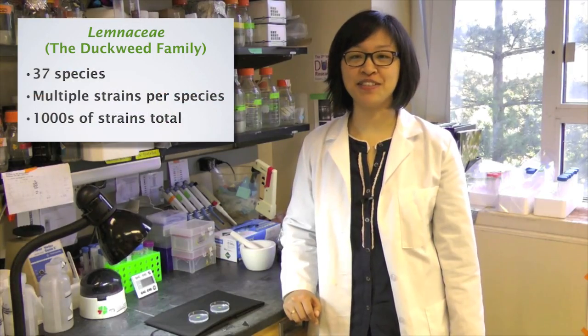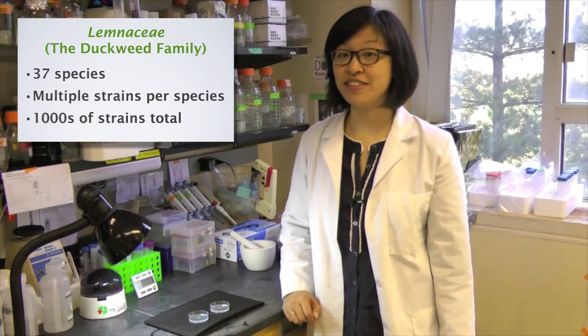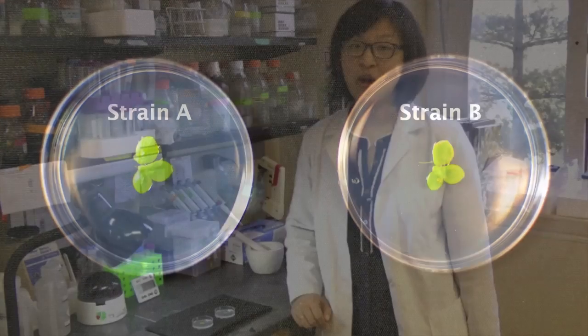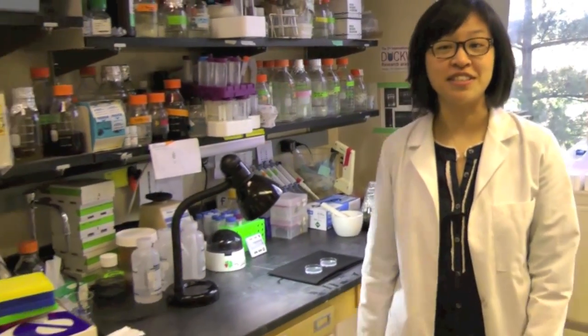Different strains of the same species often look alike. Take for instance, these two strains. But how would you tell them apart just by looking at them? Well, it's really difficult. That's why we compare differences in their DNA. We use techniques called PCR and electrophoresis to distinguish the two strains. Let's go check out my results.